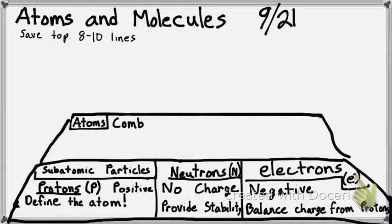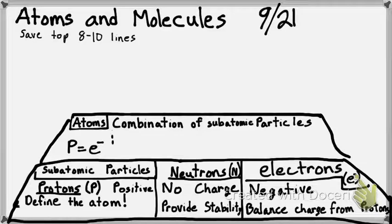Atoms are a combination of subatomic particles. Protons always must equal electrons in a neutral atom. We won't talk about ions very much in biology for our intents and purposes. Protons equal electrons.